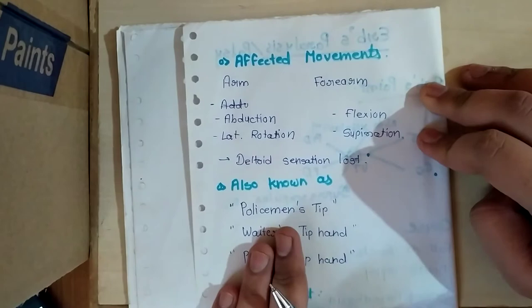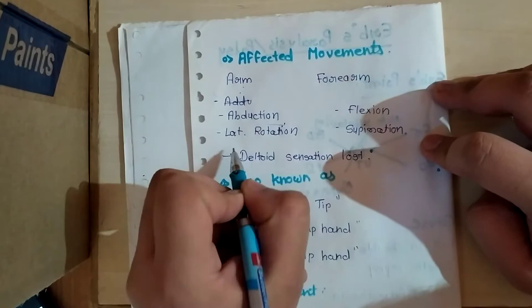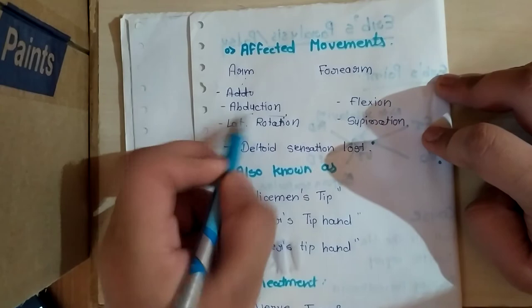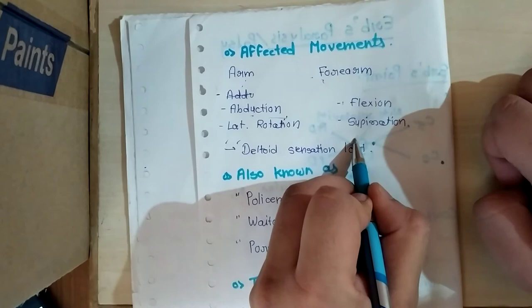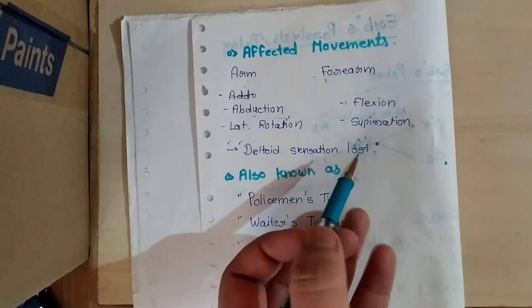First, affected movements we can see: the arm cannot abduct, that's why the position is always adducted and medially rotated. For forearm, flexion and supination cannot occur, so the forearm is in extended and pronated position.